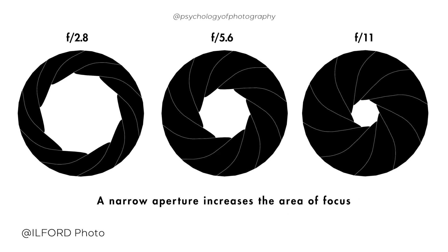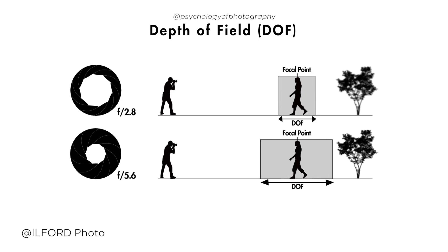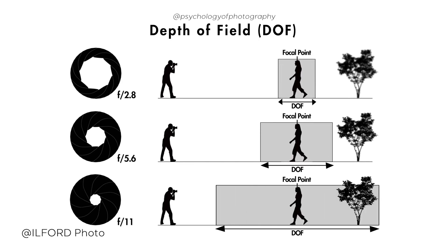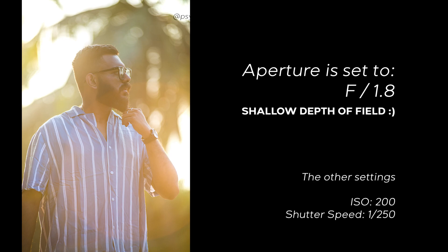A larger aperture or lower f-stop number will result in a shallow depth of field, meaning only a small portion of the image is in focus, while a smaller aperture or higher f-stop number will result in a deeper depth of field, meaning more of the image is in focus. In this image, the aperture is set to f/1.8, resulting in a shallow depth of field and a well-exposed subject. The background is blurred, making the subject stand out more.